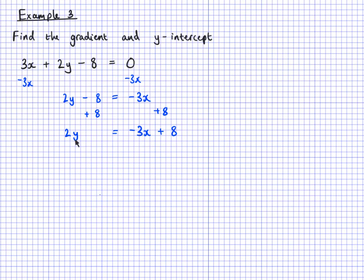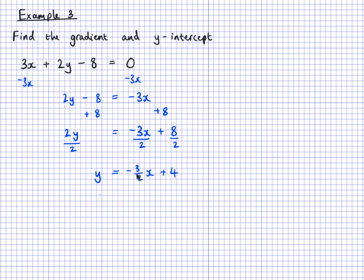Now I have 2y = −3x + 8, which looks like mx + c, but I don't want the 2 — I want just y. So I divide each term by 2. Dividing the right side by 2, I can split it into two fractions: negative 3x divided by 2 is negative 3 over 2 times x, and 8 divided by 2 is 4. So y = −(3/2)x + 4. I can think of it as negative 1.5 but I'll write it as a fraction.